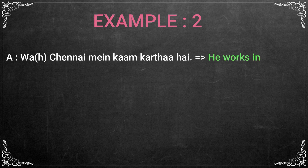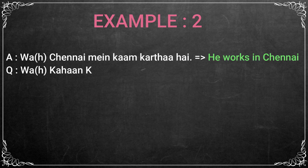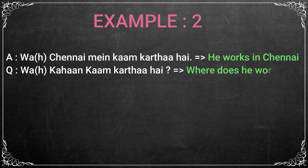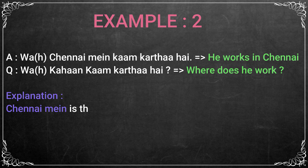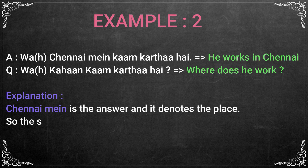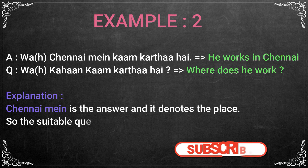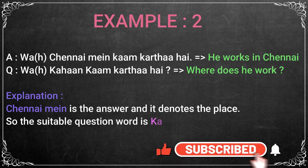This is an answer: He works in Chennai. Chennai Me is the key answer. It denotes the place. So the suitable question word is Kahaan. The question will be: Woh Kahaan Kaam Karta Hai? — Where does he work?